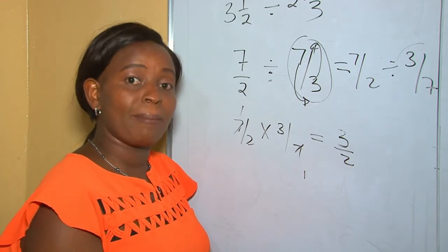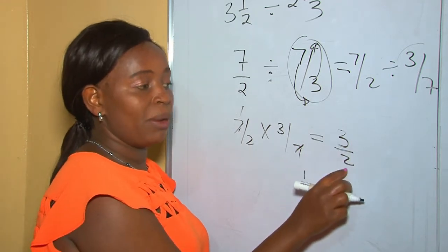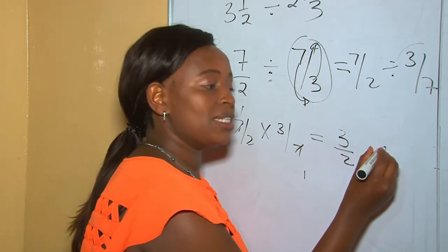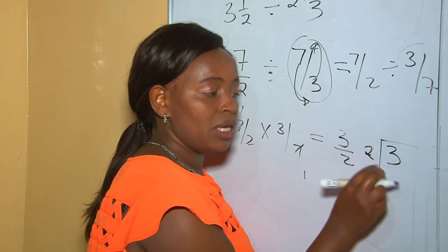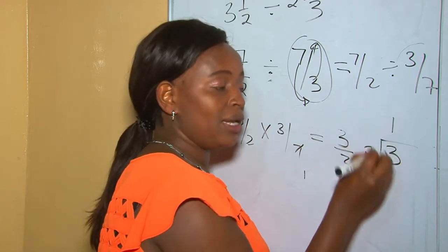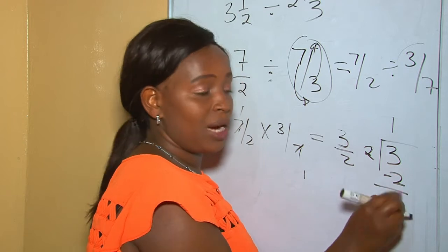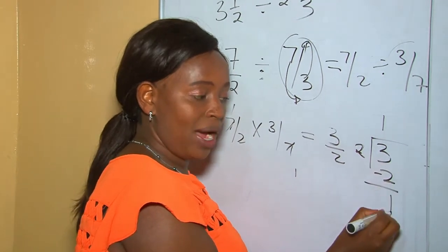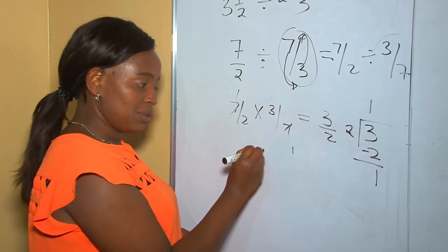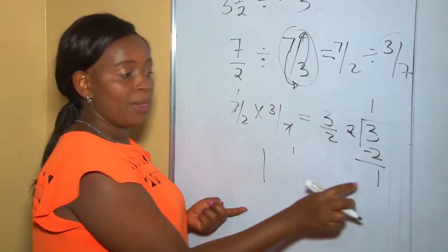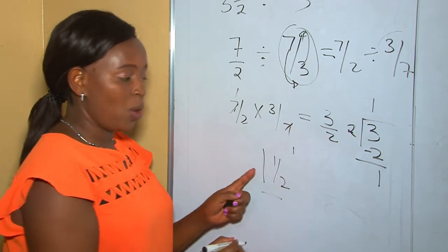Our answer is 3 over 2, which is an improper fraction. Remember the rule: never leave your answer in improper fraction form — always change it into a mixed fraction. So 3 divided by 2: 1 times 2 is 2, and 3 take away 2 is 1. Our quotient becomes the whole number and our remainder takes the fraction part, so the answer is 1 and a half.